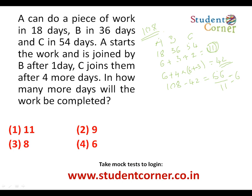Remaining work: 108 - 42 = 66 units. With all three working at 11 units per day: 66÷11 = 6 more days. The question asks 'how many more days after C joins,' so the answer is 6 days. Note: total days would be 1+4+6 = 11 days, but the question specifically asks for more days after C joined.